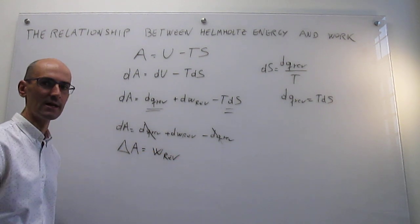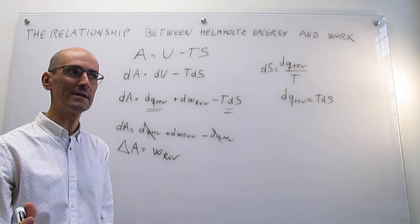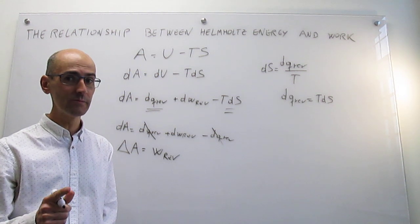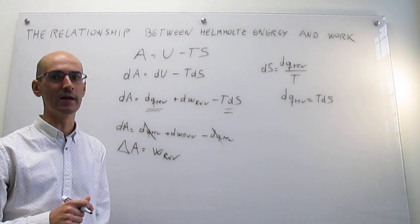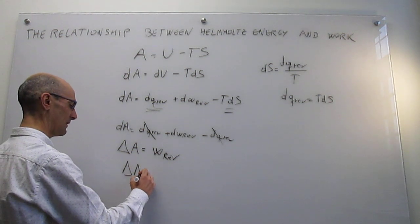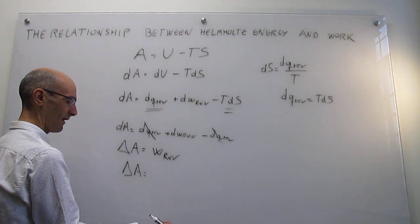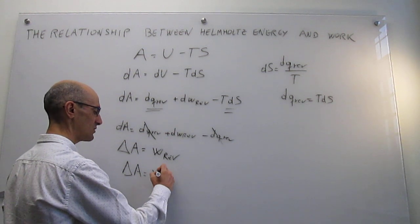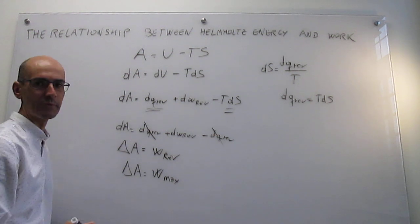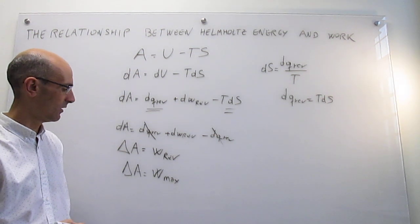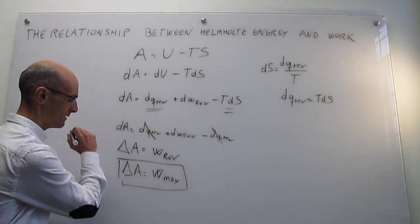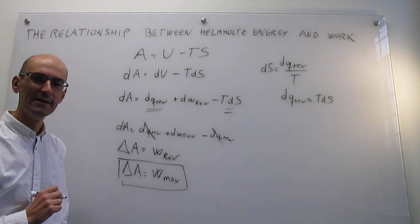This is very nice. Now, there was an important quality of the reversible work: it is the maximum work you can get out of a process. Remember that that always applies. So we can further rewrite that expression as the change in Helmholtz energy equals the maximum work, because in a reversible process you always do maximum work. That's a very nice relationship between the Helmholtz energy and work.